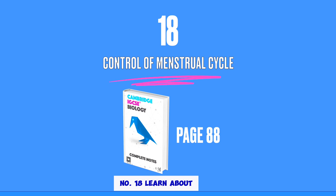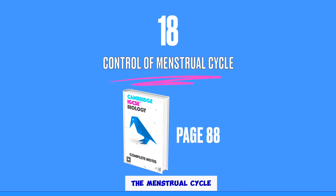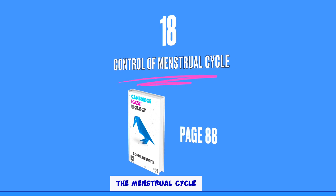Number 18: learn about the role of different hormones in the control of the menstrual cycle.